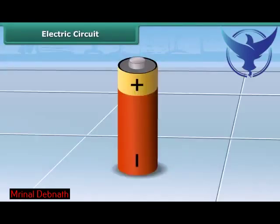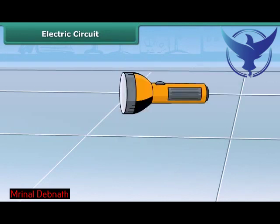An electric cell or a dry cell is the source of electricity for the bulb to glow. Let us know how the bulb in a torch glows.